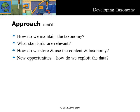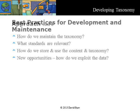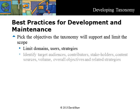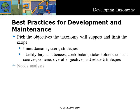The taxonomy should also be extensible to meet the needs of new opportunities as they emerge. There are several best practices for developing a taxonomy. The strategy should start with a statement of goals and purpose. Pick the objectives the taxonomy will support and limit the scope — limit domains, the users and the strategies. Do an environmental scan and inventory to identify and document the target audiences, contributors, stakeholders, content sources, content volume, overall objectives and related strategies. Do a needs analysis based on business objectives. A needs analysis focuses on the requirements related to the goals, aspirations and needs of the users or user community and feeds them into the taxonomy analysis process. The main purpose of a needs analysis is the user's satisfaction. The output should be a statement of scope and objectives to establish a framework for the development of the taxonomy.